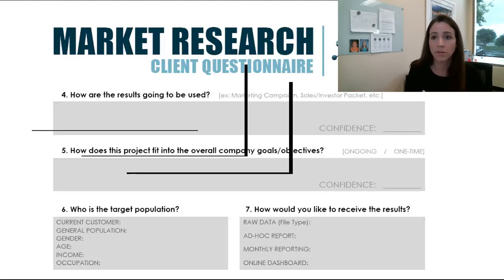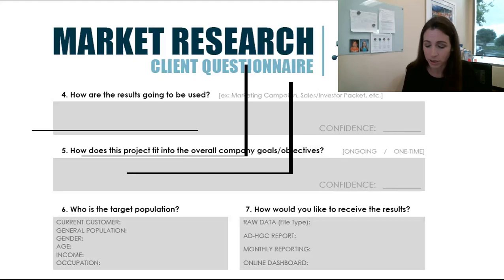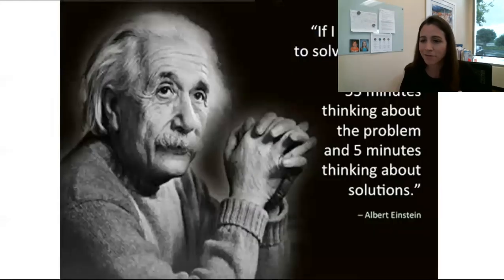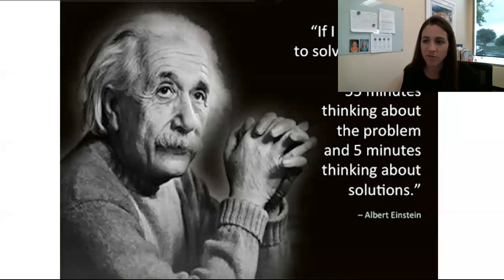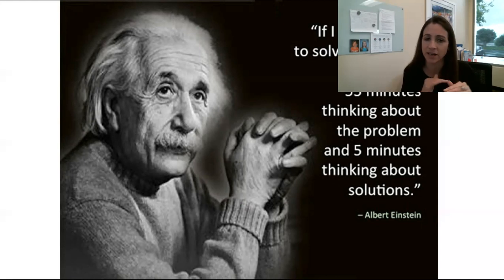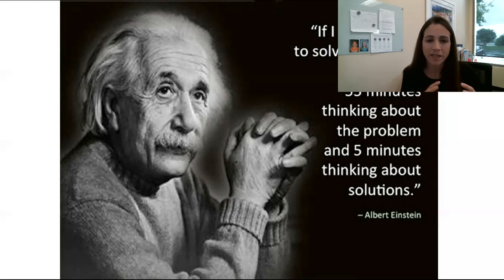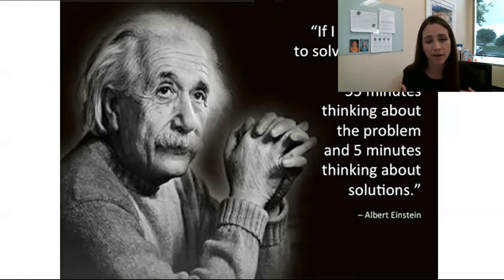In the beginning of any research project, we want to know what problem we're solving. I love this quote from Albert Einstein: 'If I had an hour to solve a problem, I'd spend 55 minutes thinking about the problem and five minutes thinking about the solution.' We need to make sure it's clearly defined — not just in a research project but in everything else we're doing. If it's not clearly defined in the beginning, we are going to waste a tremendous amount of time and resources.